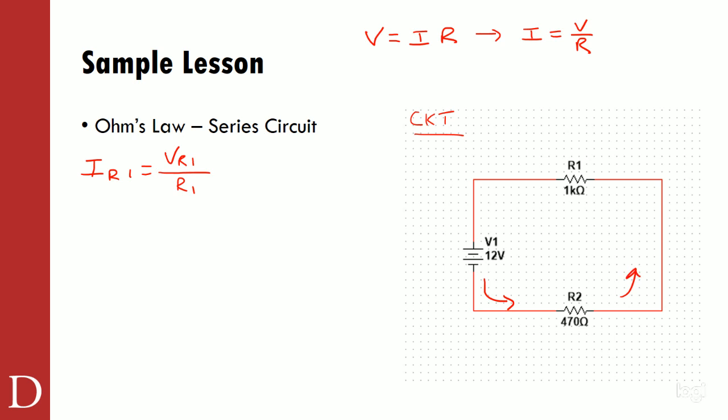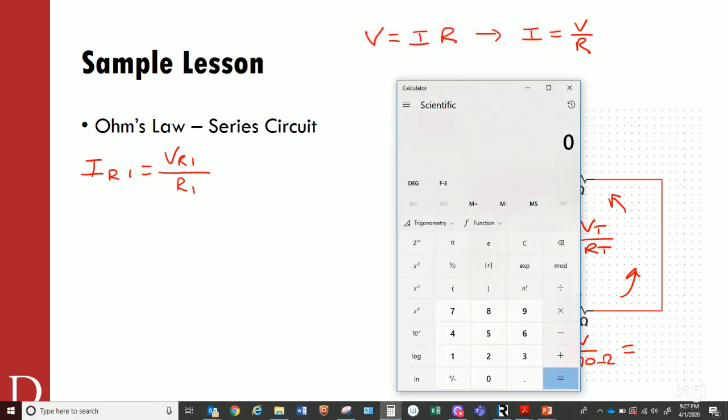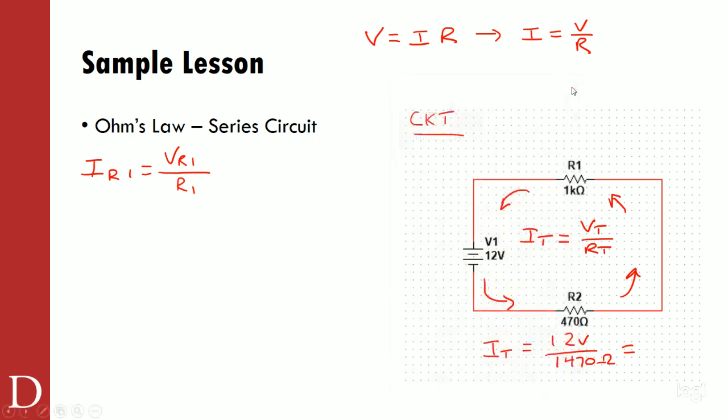I only have the resistance of R1. So maybe I can calculate the current. Well, I know that the current in a series circuit is equal to the total current. So the total current is equal to the total voltage divided by the total resistance that I can calculate. And I know that will give me IR1, which will give me VR1. So I'm going about it kind of a backwards way, but that'll work. So in this particular case, IT or the total current is equal to total voltage, which is 12 volts divided by total resistance, which is 1,470 ohms. That's 470 plus 1,000. And I'm going to get a number for this. Now, the beauty of this is I don't have a calculator handy, but I pre-programmed that button on my Wacom to bring up my calculator.